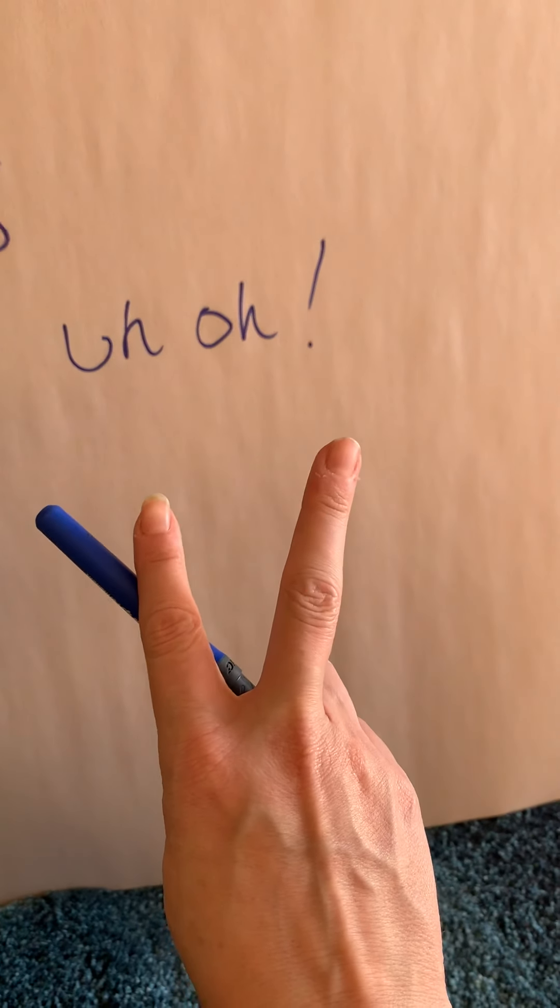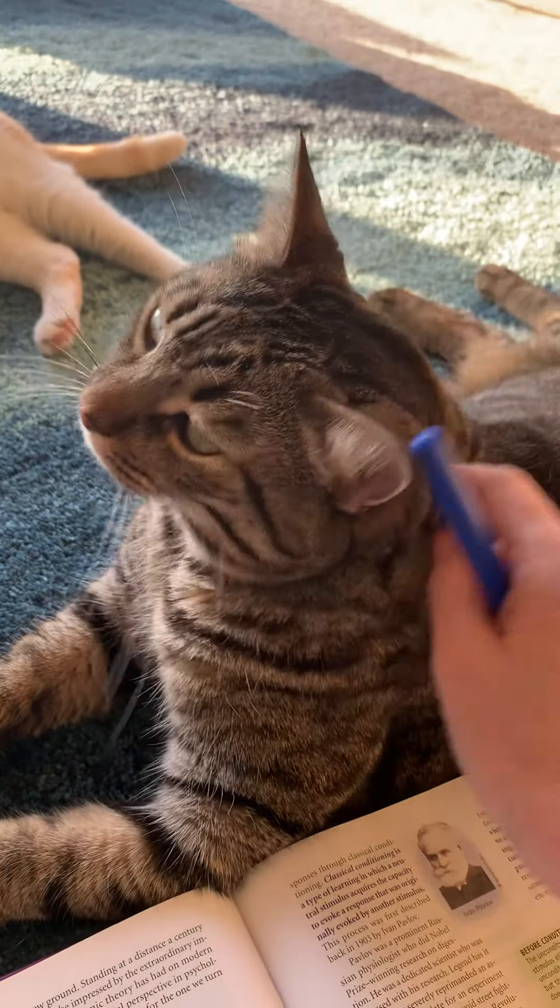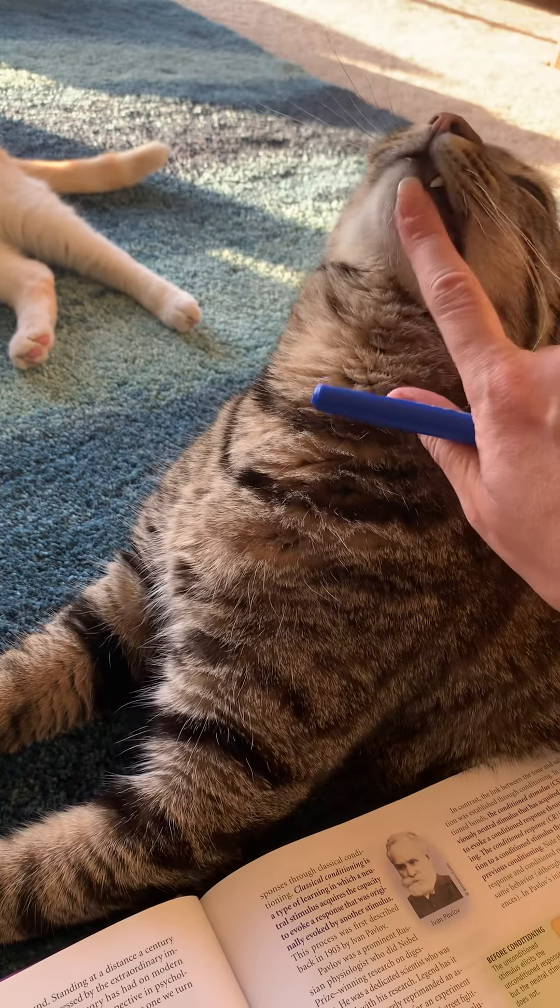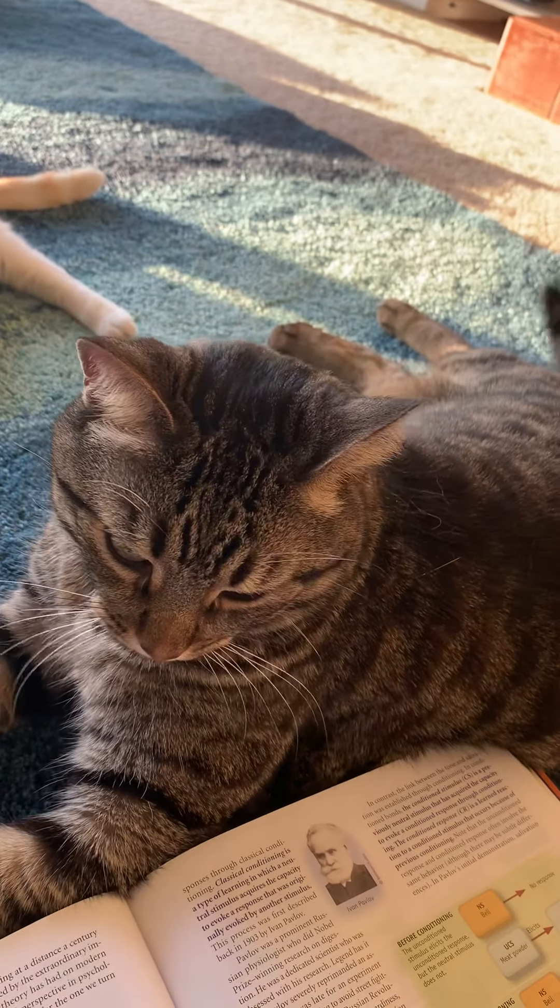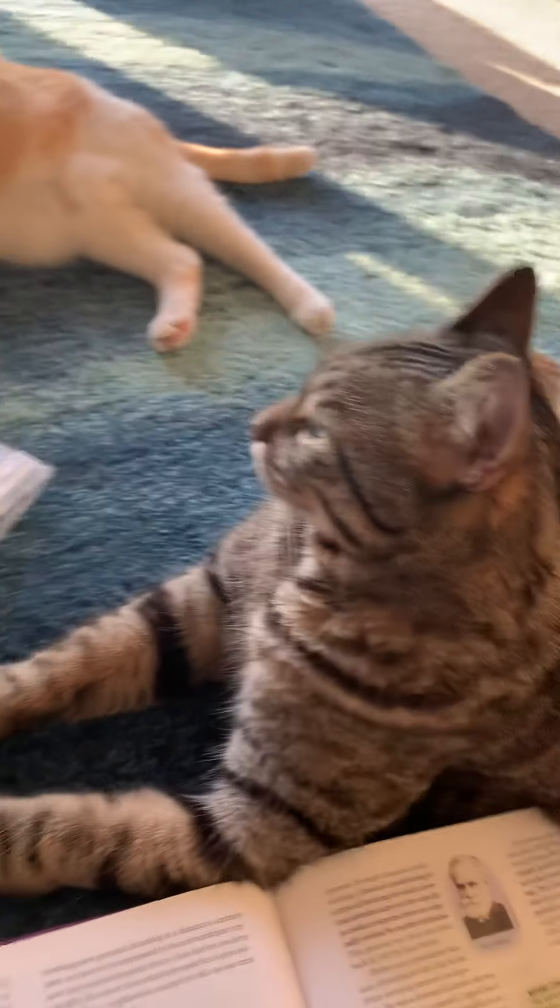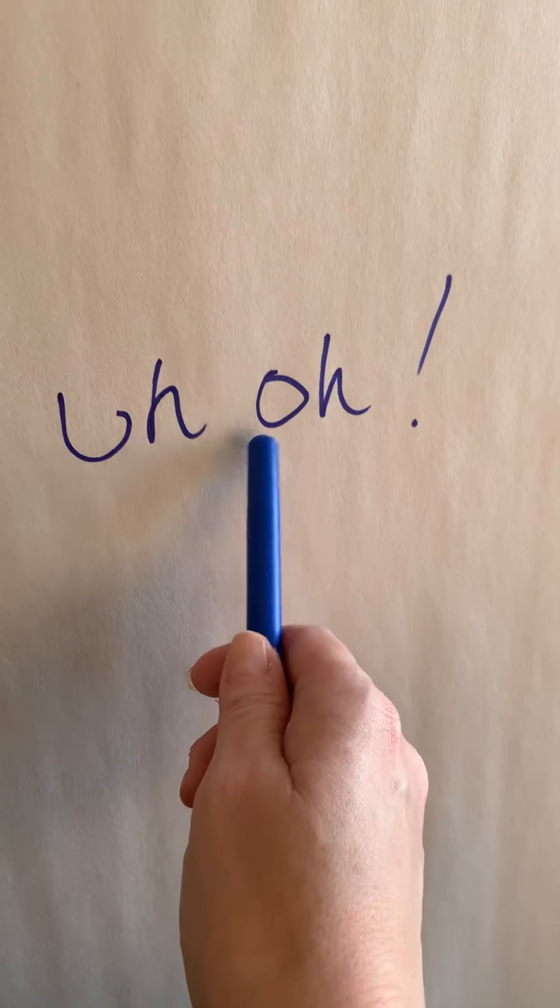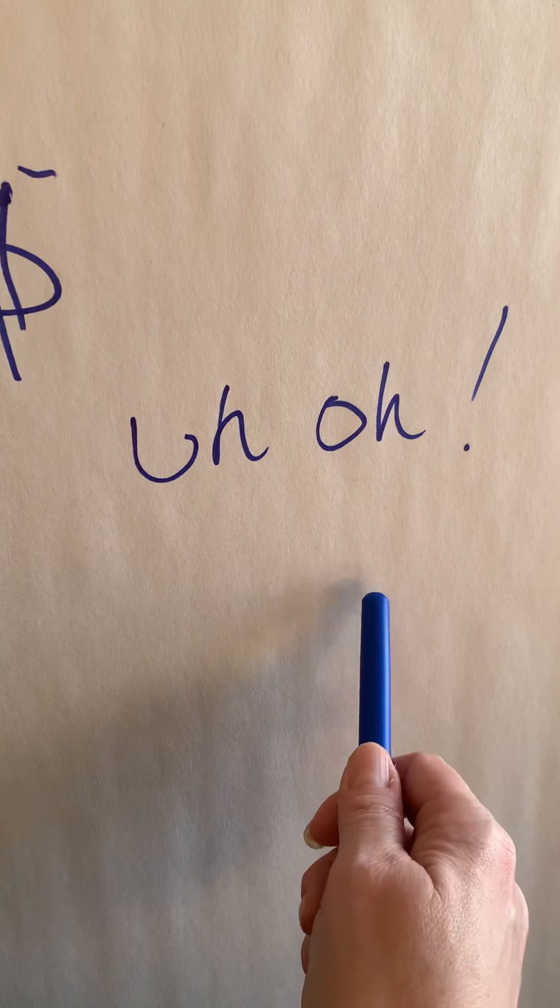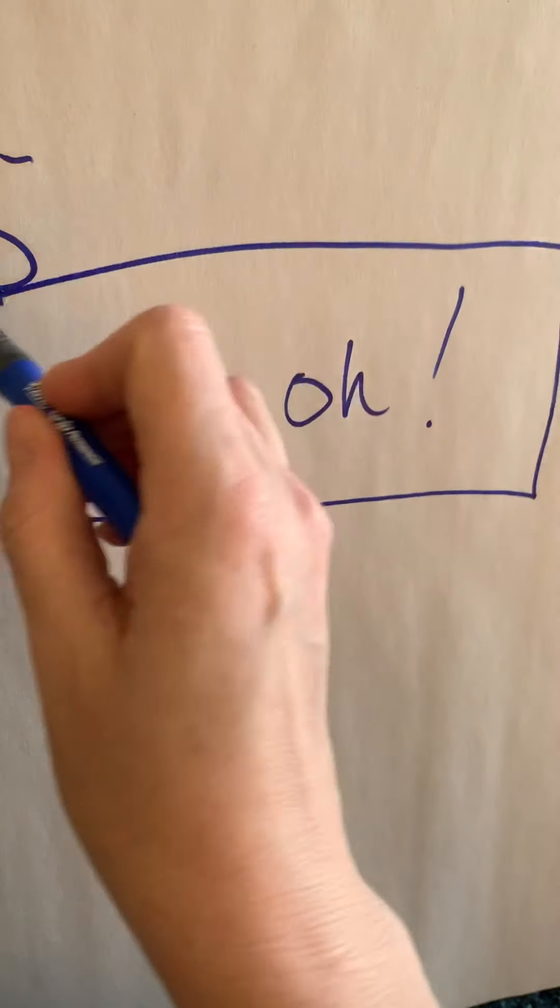But when he meowed twice, he would get a treat. So over time again, he learned in his little kitty brain that if I meow twice, I will get a treat. And then again, we did that for a very long time until when I would mimic uh-oh, the closer he got to the word uh-oh, then he would get a treat, until he only got treats when he would actually say the word uh-oh.